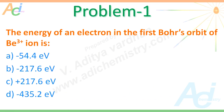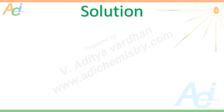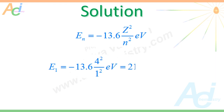Now let us solve a few problems. The first problem is: the energy of an electron in the first Bohr's orbit of Be³⁺ ion is — with a few options given. The energy of an electron in the nth orbit is given by −13.6 Z² / N² eV. For beryllium, Z = 4, and for the first orbit, N = 1. Plugging these values in, we get −217.6 eV. This is the energy of the first orbit in Be³⁺ ion.